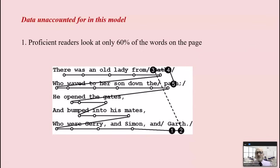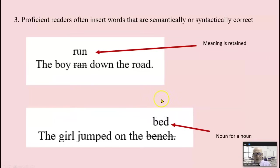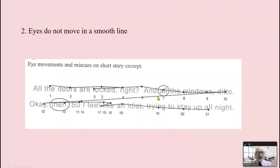For example, proficient readers don't look at every word on the page. We only look at 60% of the words on the page. Our brain tricks us into thinking that we're actually looking at each and every word. As well, when we read, our eyes do not move in a straight line from left to right. It's more like hummingbirds going back and forth. And the dot represents where the eyeballs actually landed. This is eye movement research.